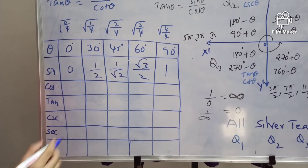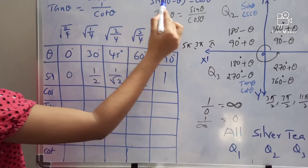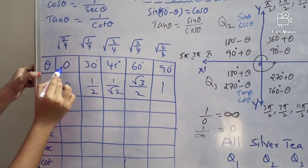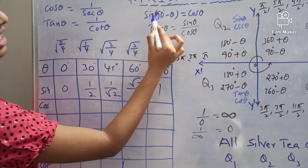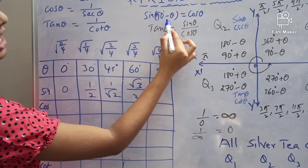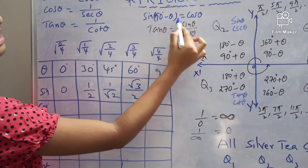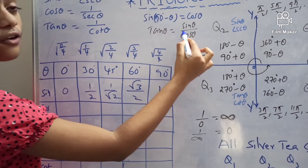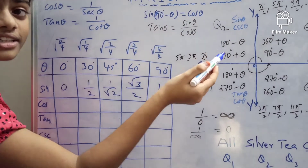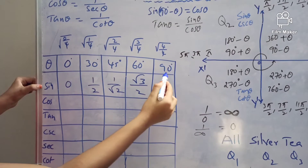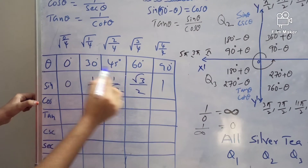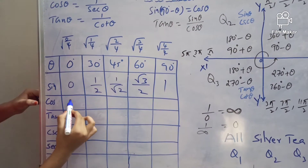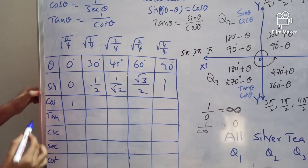For cos 0°, we use sin(90° − θ) = cos θ. Substituting θ = 0°: sin(90° − 0°) = cos 0°, so sin 90° = cos 0°. Since sin 90° = 1, therefore cos 0° = 1.